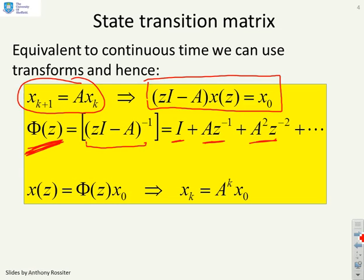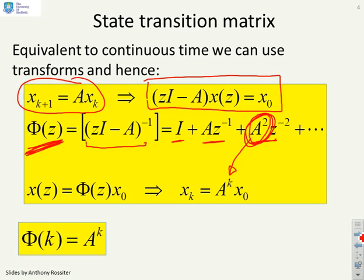Clearly, Φ(z) is known. If you do an inverse Z-transform, then you're going to extract individual components of this series and you will see that you get terms of the form A to the power k. So, x_k = A^k x_0. So that's your definition of Φ(k). It's simply A to the power k.